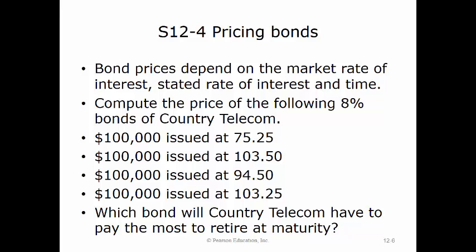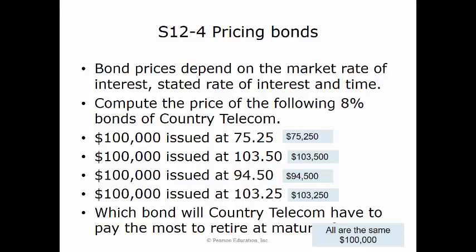Bond prices depend on the market rate, stated rate, and time. This problem asks us to compute the price of the following 8% bonds of Country Telecom. We multiply the $100,000 face amount by the given percentage. For example, $100,000 times 75.25% equals $75,250. The results are $75,250, $103,500, $94,500, and $103,250. All bonds will have the same maturity value of $100,000.